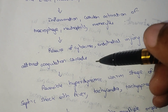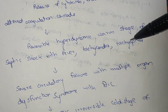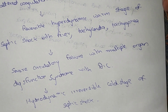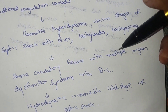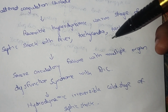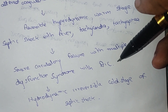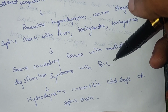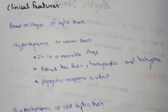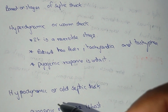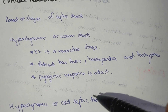With endothelial injury and altered coagulation cascade, if endothelial injury is reversible, the septic shock presents as the warm hyperdynamic stage with fever, tachycardia, and tachypnea. If irreversible, it becomes the hydrodynamic cold stage — severe circulatory failure with multiple organ dysfunction syndrome and DIC, where peripheral vessels coagulate and clot.